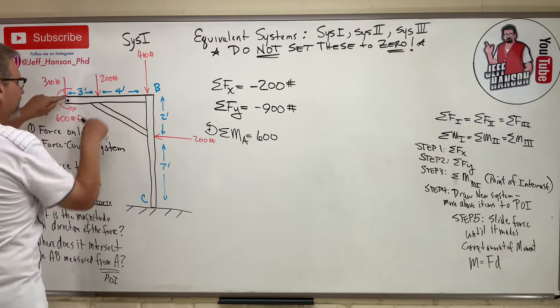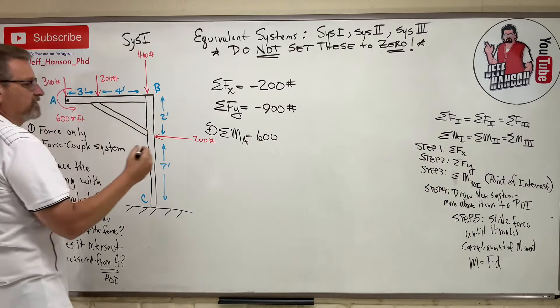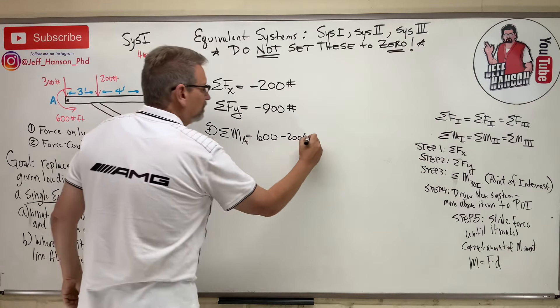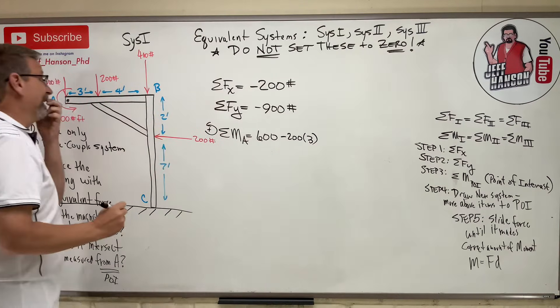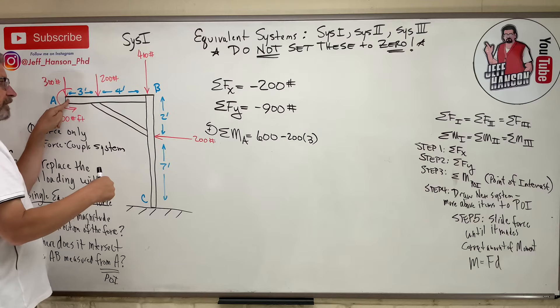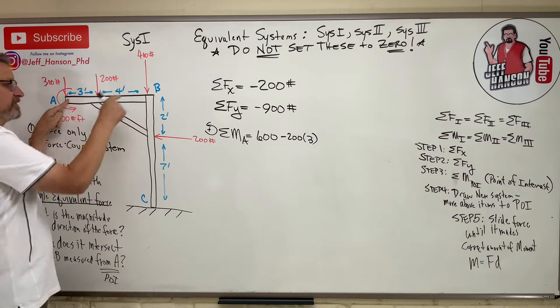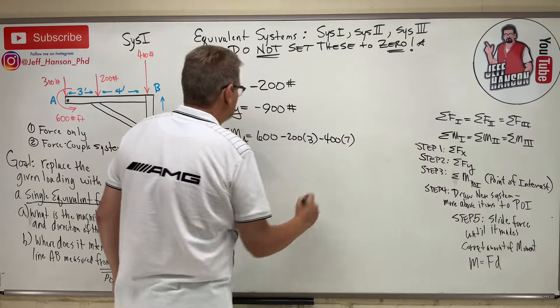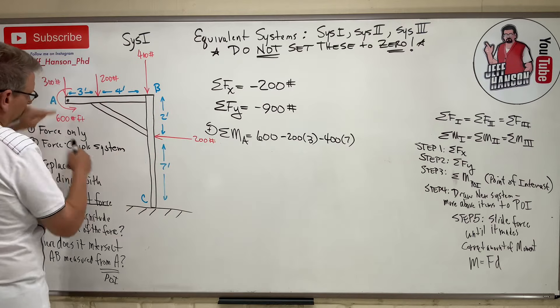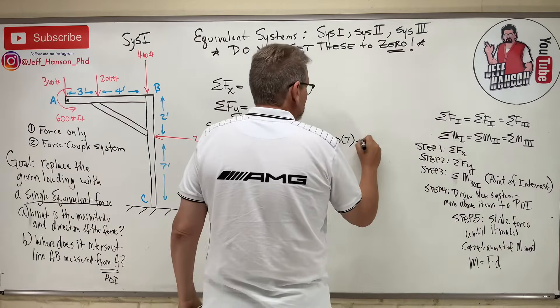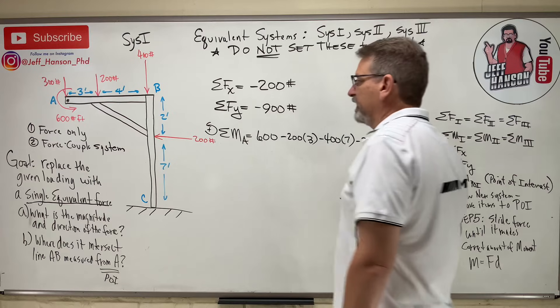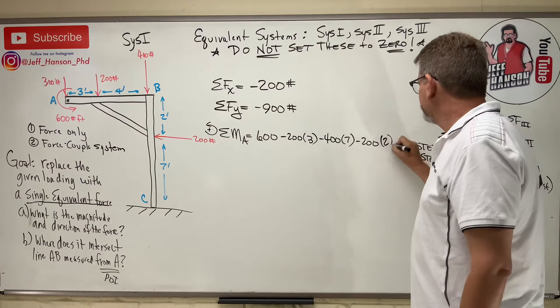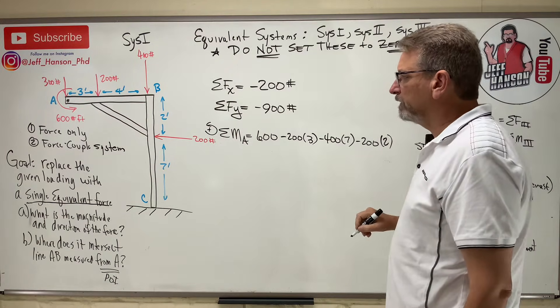No. You can't knock out a moment. All right, then we have 200, which rotates us clockwise. So, minus 200 times how far away? 3. And then I got 400 over here, which rotates me clockwise, times 7. So, minus 400 times 7. And then I've got the 200, which rotates me clockwise again, minus 200 times, how far away? If the force is in the x, the distance is in the y, times 2.